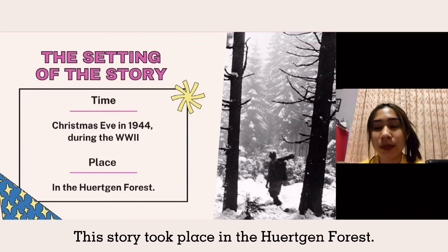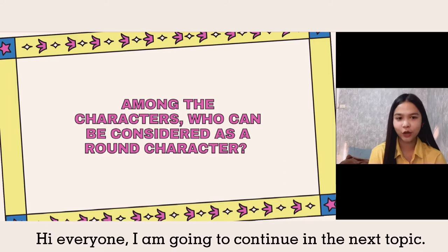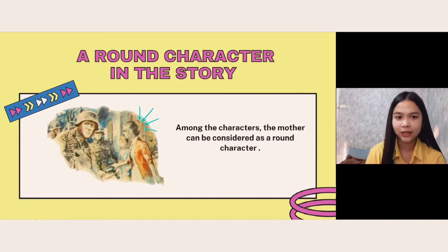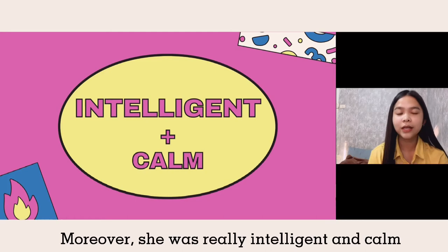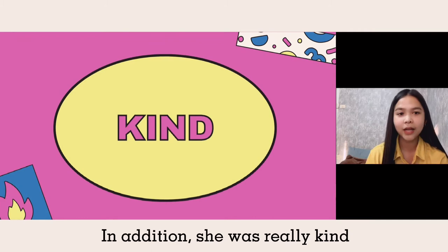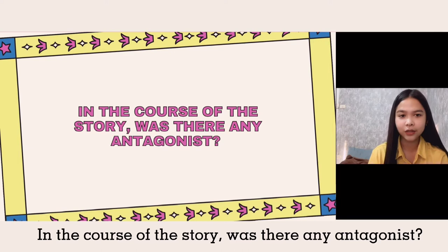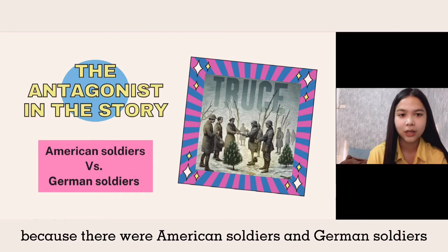Next, Sushanali will be talking about the next topic. Hi everyone. Among the characters, who can be considered as a round character? The mother can be considered as a round character because she was really brave to step outside and talk with a soldier. Moreover, she was really intelligent and calm because she could control seven people in and around her house. In addition, she was really kind because she comforted the enemy by preparing a meal. In the course of the story, there was an antagonist because there were American soldiers and German soldiers who were enemies staying in the same house.